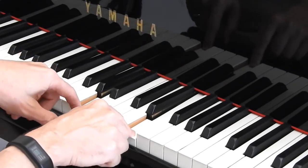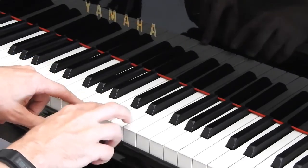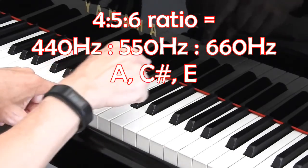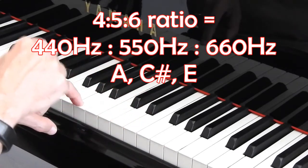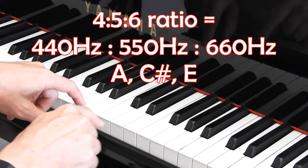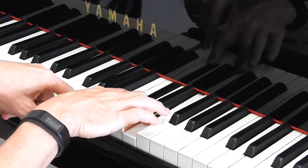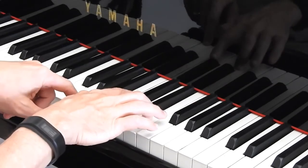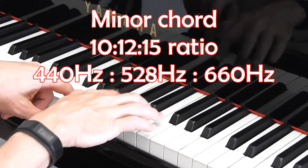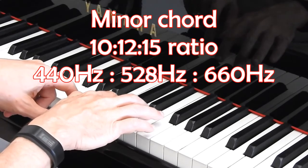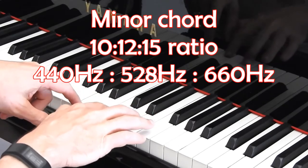Now we're going to make it a chord, and this gets really interesting. A major chord has a four, five, six frequency ratio. A minor chord, which just moves the middle note down a half a step, has a 10, 12, 15 ratio.